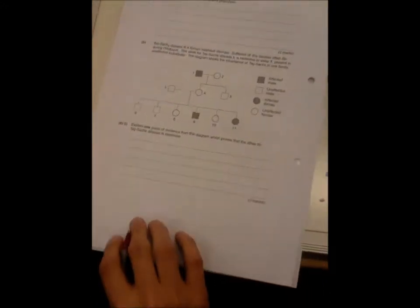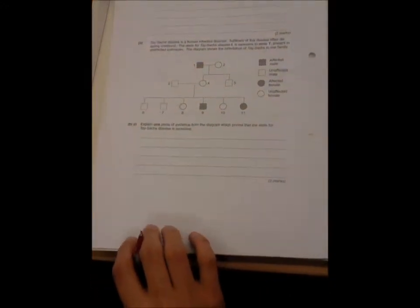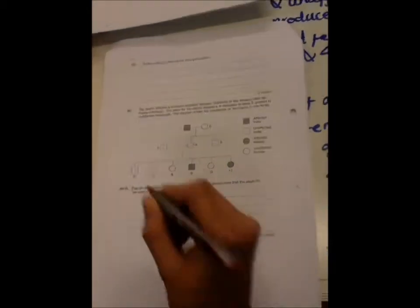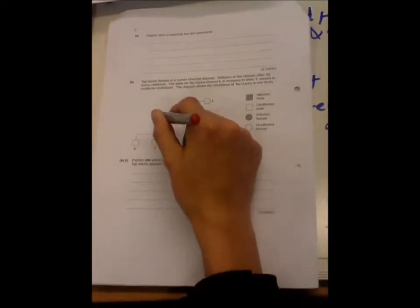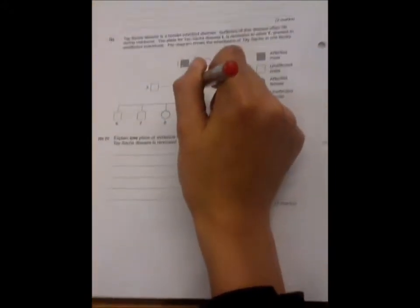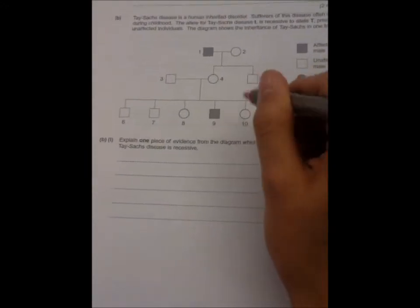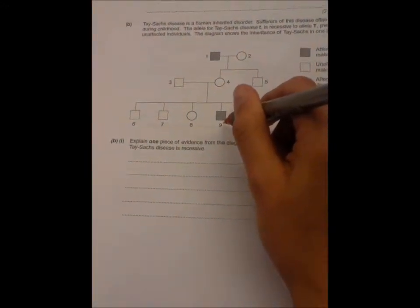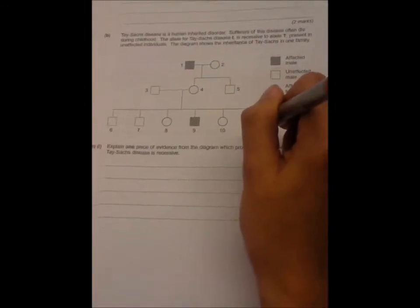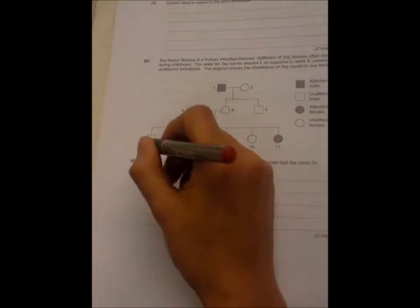There is a similar question at the very start of the paper where there's two black cats that have white kittens and it asks for evidence that the white is recessive. So a similar case here, we can see that male 3 and female 4 who are unaffected have offspring male 9 who is affected and female 11 who is also affected.